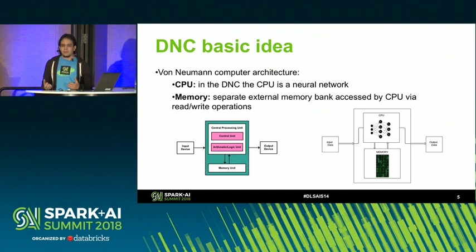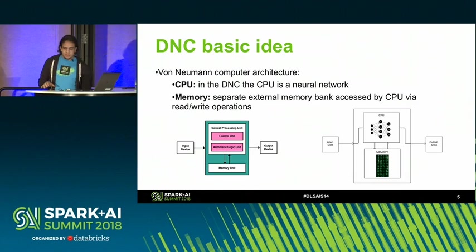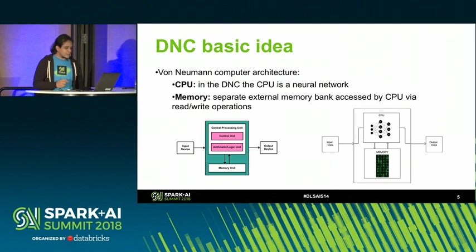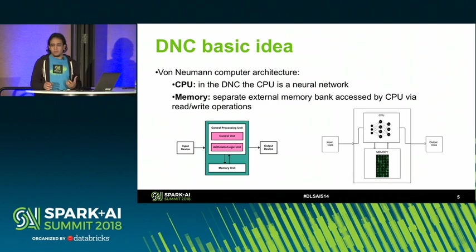The idea of the DNC is to use this as a template or building block. The interesting thing is that the CPU is a neural network — it is called a controller, so the controller neural network takes the role of the CPU. You also have external memory, like we have in our computers, which means this is the RAM of the system. You can see here a comparison: on one side we have the original von Neumann architecture used in almost every computing system today, and on the other side we have the DNC.